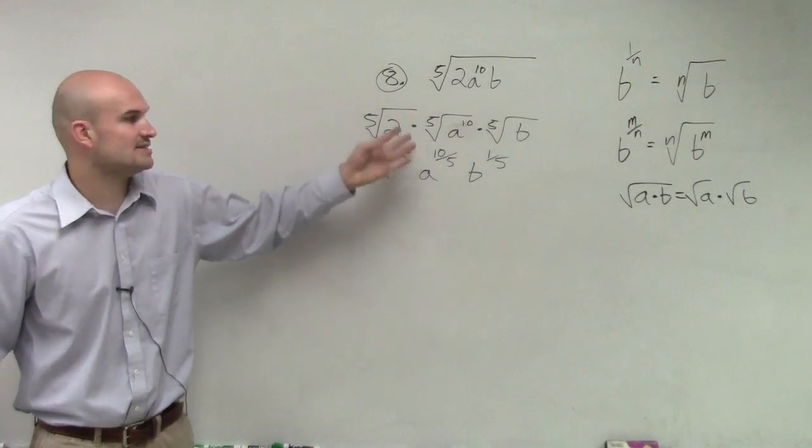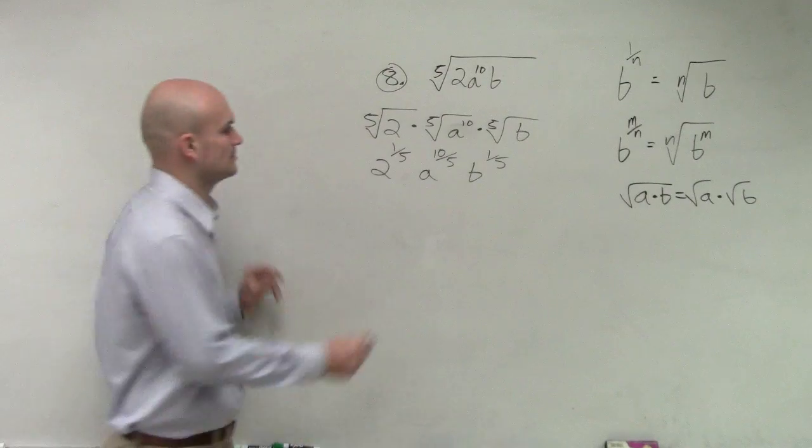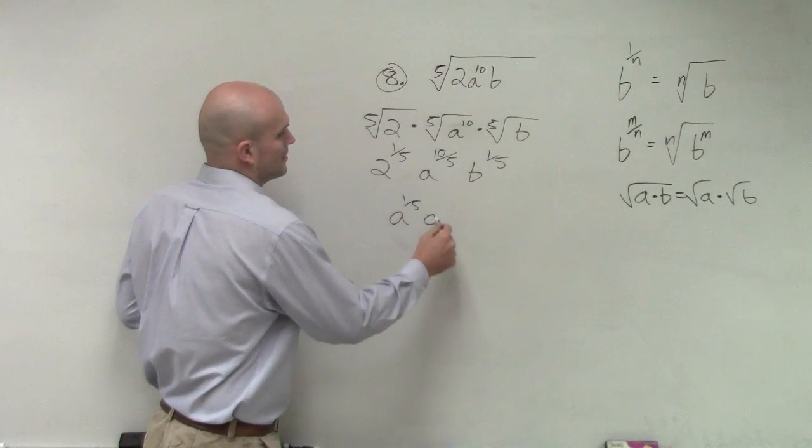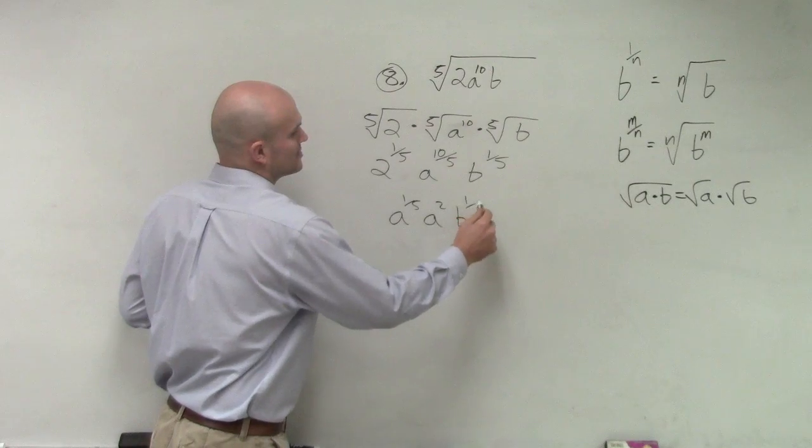Then the only thing I can do to simplify this is 10 divided by 5 is 2. So I can say a to the 1 fifth, a squared, b to the 1 fifth.